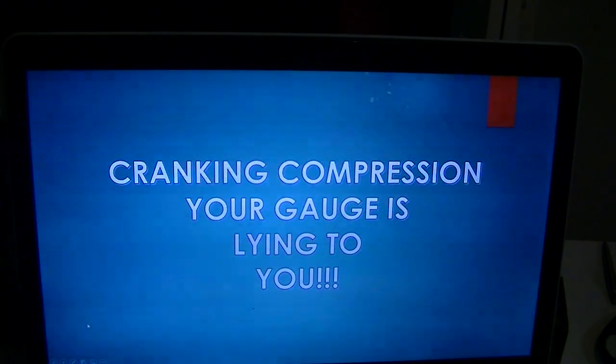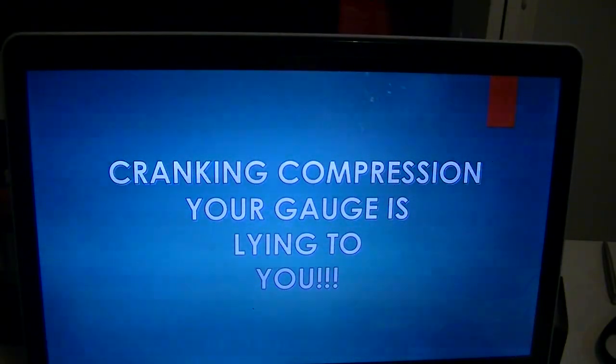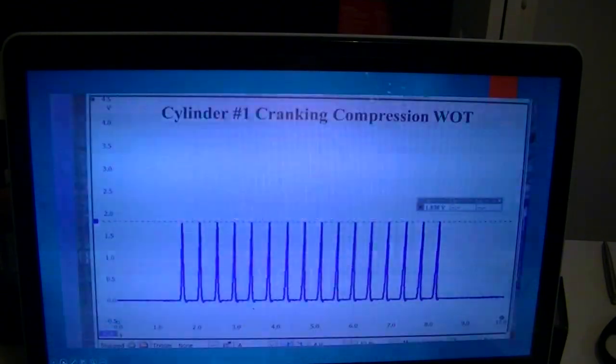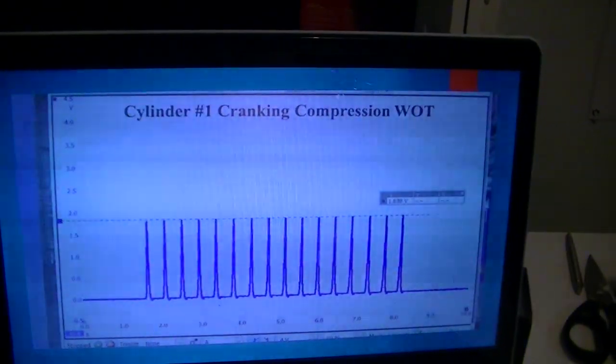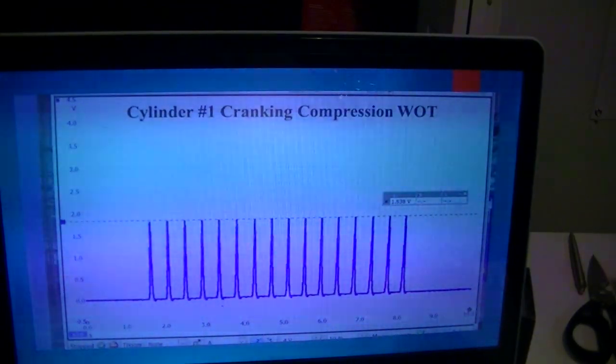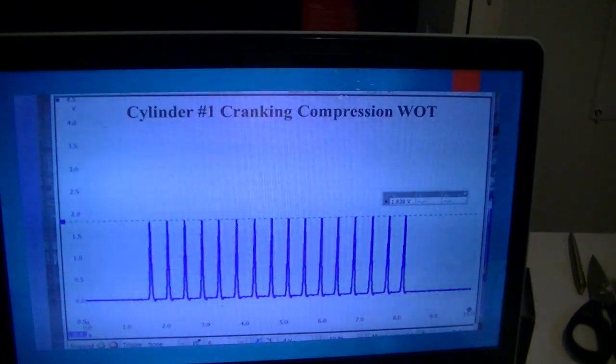With the transducer, you get to see every time that piston goes up and down. Here's an example of a cranking compression test where you can see every time that piston goes up and down, I get a picture of what each stroke looks like. If I use my traditional gauge on this example, it's gonna read fine. The transducer, they both read good, no harm no foul.